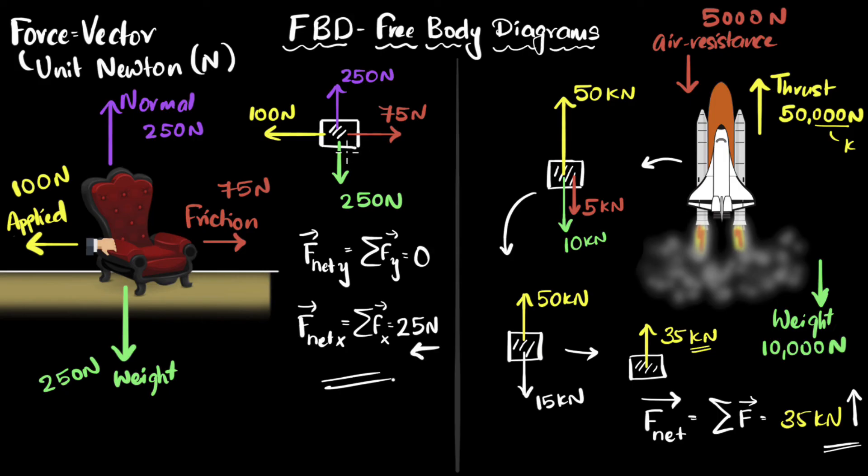By the way, whenever forces cancel each other out, giving you zero, we usually say the forces are balanced. That makes sense because these two forces are balancing each other. And so we'll say in this case, the forces are balanced in the vertical direction. And in the horizontal, you can see there are unbalanced forces. The same was the case over here. Are there balanced forces? No, there are unbalanced forces over here.